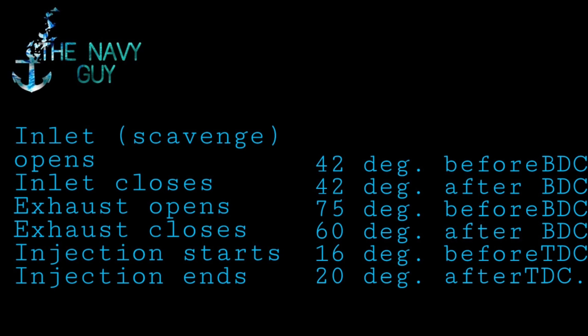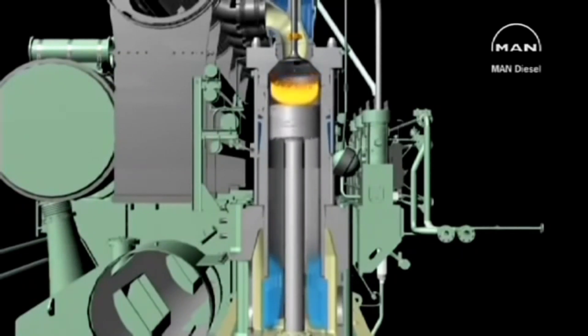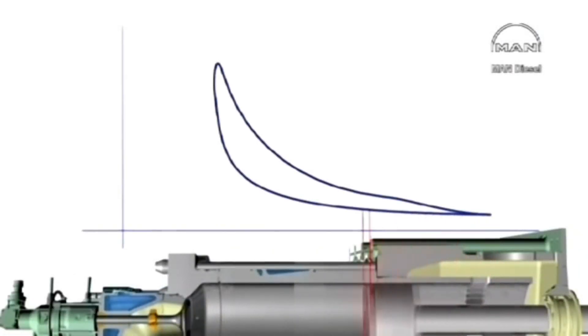Now let's understand this cycle using an animation of MAN B&W engines. The PV diagrams are also known as indicator card diagrams which are drawn using indicator instrument. We will learn about these in our further videos.